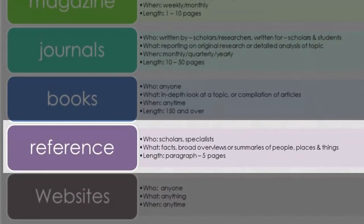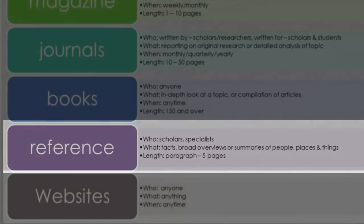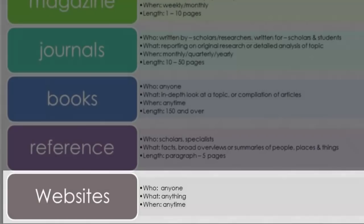Reference resources, such as encyclopedias and dictionaries, are usually written by scholars or specialists. They offer broad overviews of topics and range in length from a couple of paragraphs to several pages. Websites can be written by and for anyone on any topic at any time.